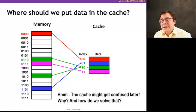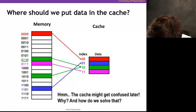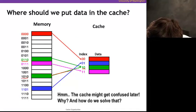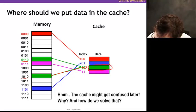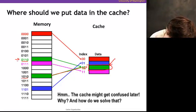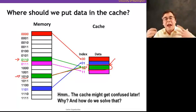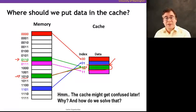Now, once we put the data there, suppose this address goes to a certain cache location — but another address also maps to the same location in the cache. The question is: how does the processor know whether the data there corresponds to one address or the other? Some additional information has to be stored alongside the data in the cache to tell which block of memory is stored there, because we lost information in this mapping.